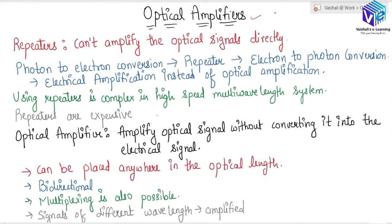So first of all, why do we require the optical amplifier? Optical amplifiers are required to boost the optical signal. Now a repeater can also do the same thing, but repeaters cannot amplify the optical signal directly. First we have to do photon-to-electron conversion — converting from light to electrical signal — and then we can use the repeater. The repeater amplifies the electrical signal, which is then converted back to optical signal by electron-to-photon conversion. So with repeaters we can only do electrical amplification; we cannot directly do optical amplification, which makes the use of repeaters a bit complex.